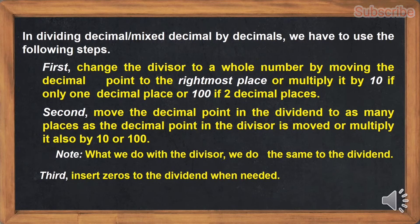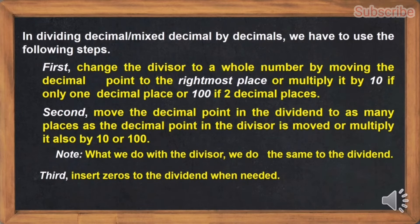Always remember, in dividing decimal or mixed decimal by decimals, we have to use the following steps. First, change the divisor to a whole number by moving the decimal point to the rightmost place or multiply it by 10 if only one decimal place or 100 if two decimal places. Second, move the decimal point in the dividend to as many places as the decimal point in the divisor is moved or multiply it by 10 or 100. Remember, what we do with the divisor, we do the same to the dividend. Third, insert zeros to the dividend when needed.